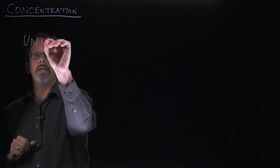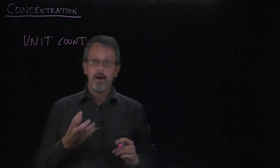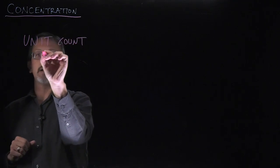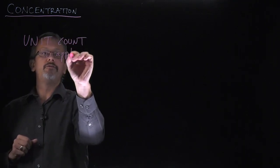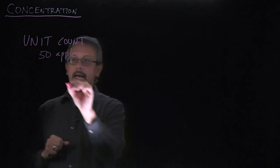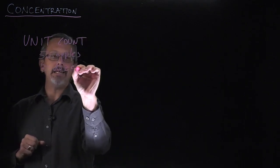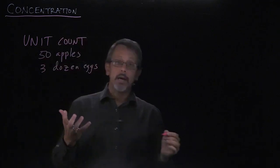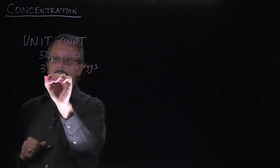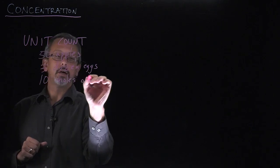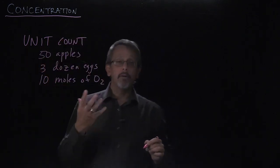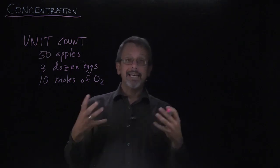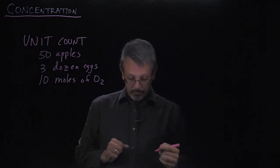In science and engineering, we have common ways to measure the amount of something. There are three ways that we typically do that. We can do a unit count. We can count things by how many individual entities there are. For example, we might have 50 apples, or we might have three dozen eggs, or another example might be 10 moles of oxygen. Remembering moles is something similar to a dozen, where it's a count of the number of molecules.